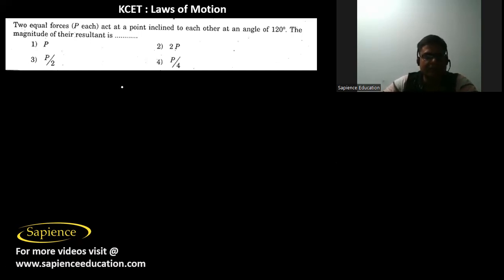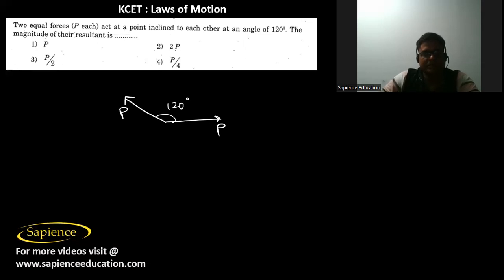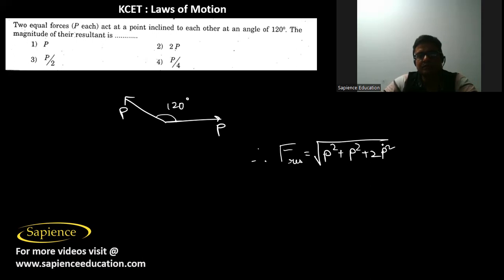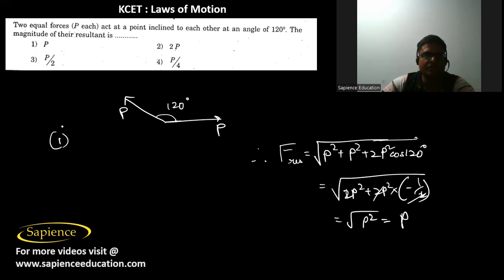Here it is told that two equal forces P each are acting at an angle of 120° with each other. The magnitude of the resultant is: √(P² + P² + 2P²·cos120°) = √(P² + P² + 2P²·(−1/2)) = √(P²) = P. So the resultant is P, and option 1 is the correct answer.